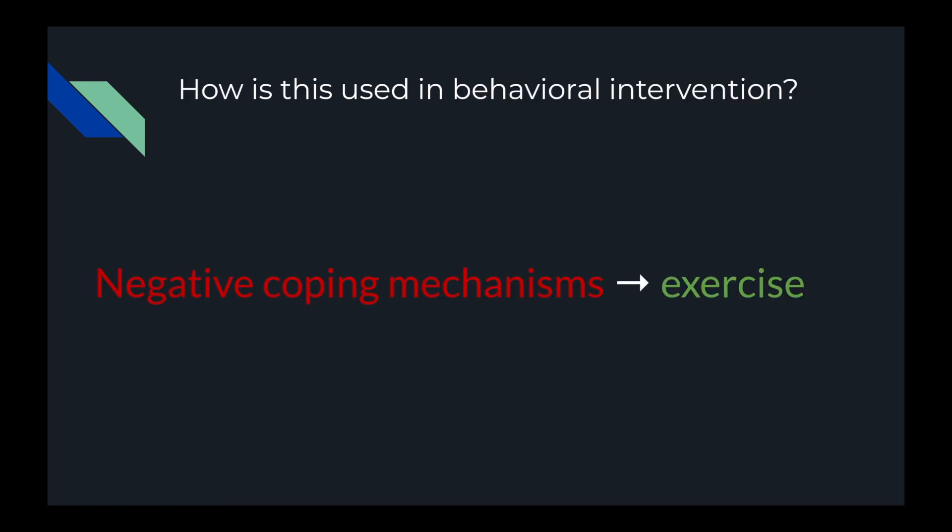So how is this used in behavioral intervention? I see a lot of health programs do this, which is switching out the negative coping mechanisms and switching to exercising, which would boost a person's mood and is also a great source of coping for an individual. For example, if a negative coping mechanism is binge drinking or excessive eating, then after a threat has been revealed, you would push the individual to switch to exercise instead.